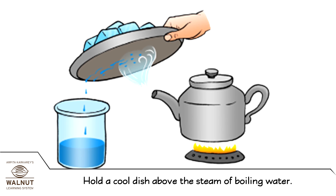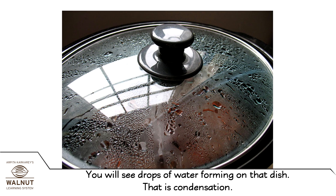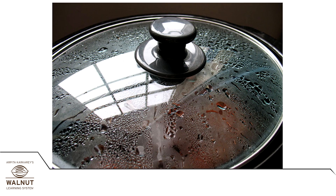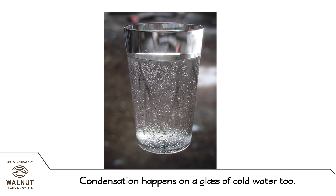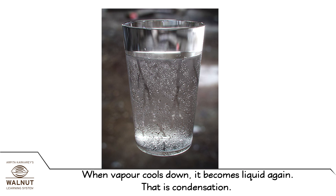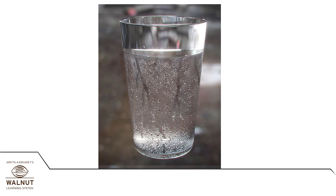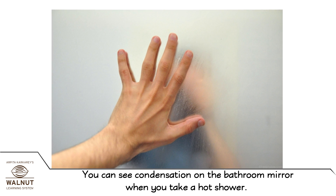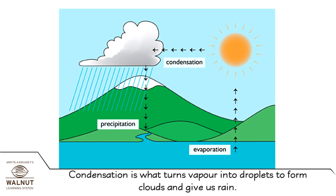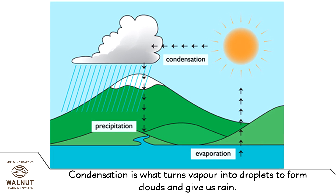Hold a cool dish above the steam of boiling water. You will see drops of water forming on that dish. That is condensation. Condensation happens on a glass of cold water too. When vapor cools down, it becomes liquid again. That is condensation. You can see condensation on the bathroom mirror when you take a hot shower.